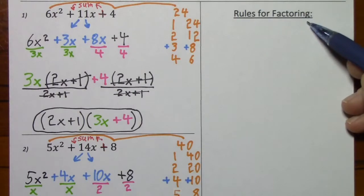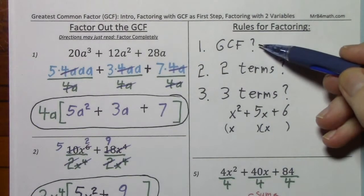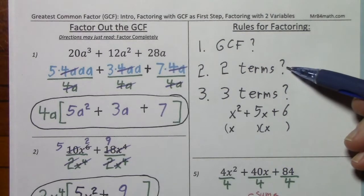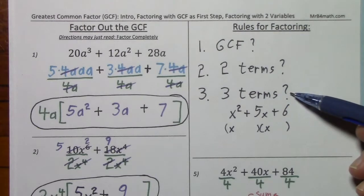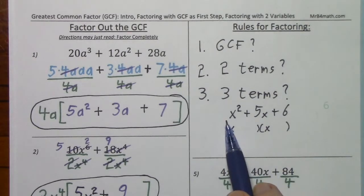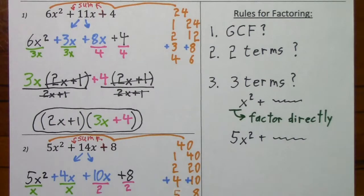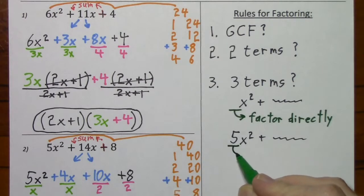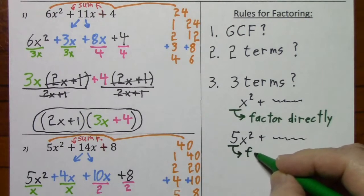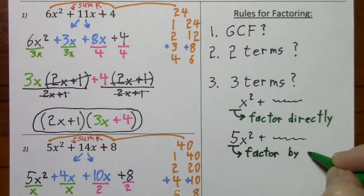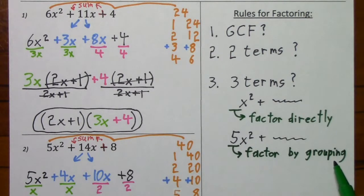Now I'll add to the rules for factoring. Number 1 is to check for a GCF — if it's other than 1, factor it out. Number 2: do you have a total of 2 terms? I'll cover this soon. Number 3: do you have a total of 3 terms? If so, is the leading coefficient 1? If it is, you can factor directly. But if you have a leading coefficient other than 1, you can use factor by grouping.